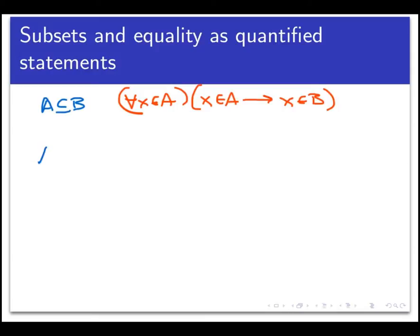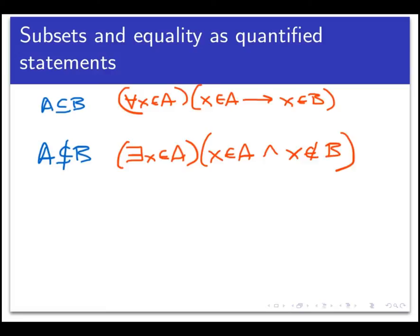On the flip side, what does it mean to say A is not a subset of B? That would be the negation of the statement above. If I'm negating a universally quantified statement like I have here, that's going to lead me to an existential statement. I would say there exists an X in A, and now I would negate this conditional statement. The negation of a conditional statement is not another conditional statement, it's a conjunction. This would be: X is in A and X is not in B.